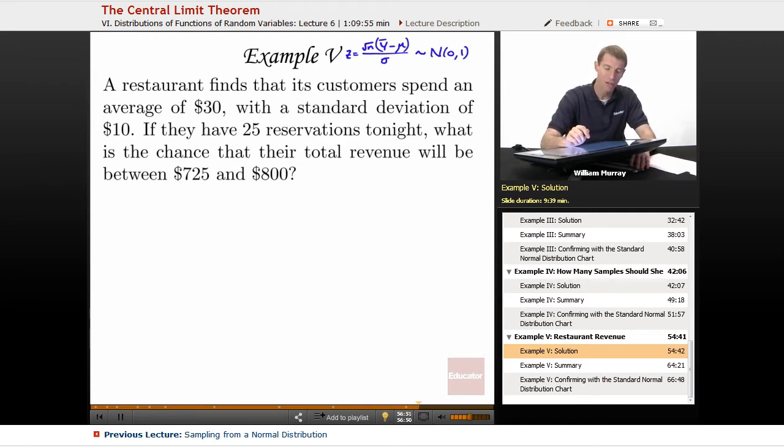Well, they want to make between $725 and $800 total. I guess I said they want to make between that. Of course, they'd be happy if they made more, but they're worried about, they want to calculate how likely is it that we'll make between $725 and $800 total. What we have here is a result that has to do with the mean, the sample mean. So how do we convert that into a mean?